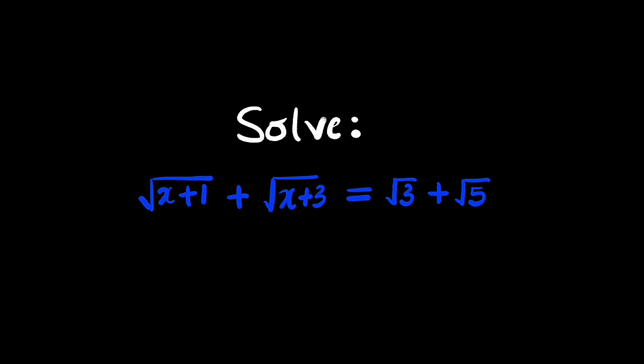The radical equation is the square root of x plus 1, then plus the square root of x plus 3 equal to the square root of 3 plus square root of 5. Alright, let's get started.